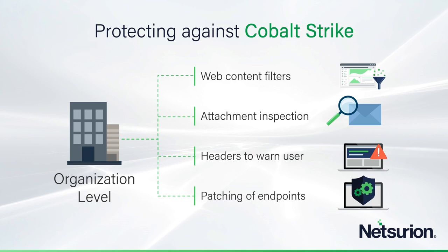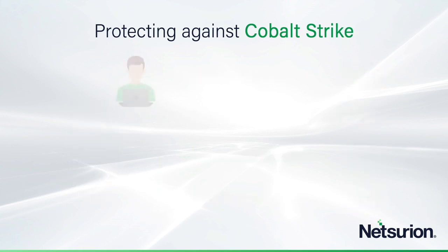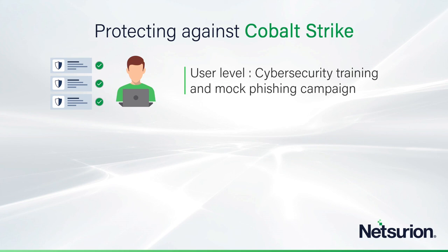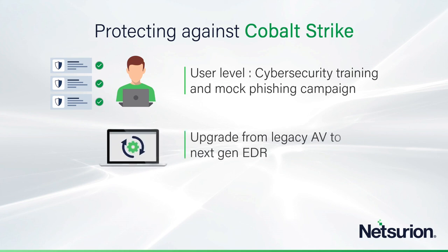At a user level, train them not to click on suspicious documents, and run mock phishing campaigns to find repeat offenders and send them for training. You should also consider giving up traditional antivirus for something that has a real chance of detecting Cobalt Strike. At Sudian, the managed OpenXDR endpoint protection solution is one such option. It uses deep learning, does in-memory scanning, and analyzes the statics of binaries — anything new that has appeared on the system. It has a wealth of capability when it comes to detecting file-less malware.